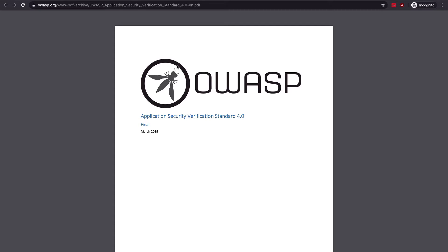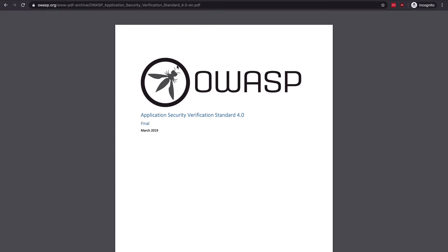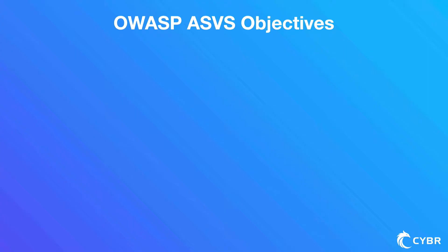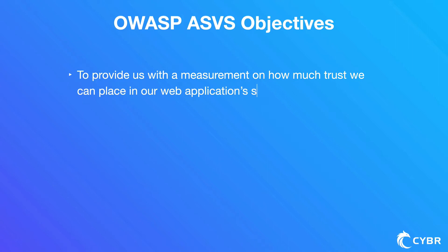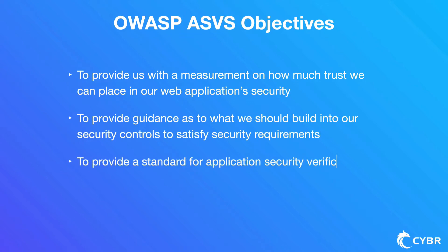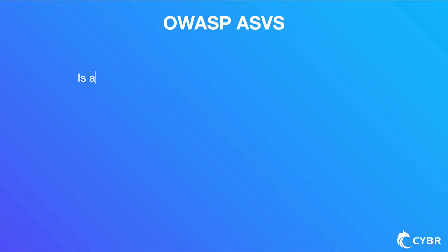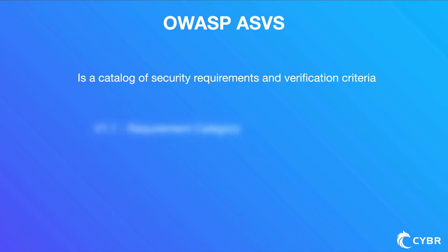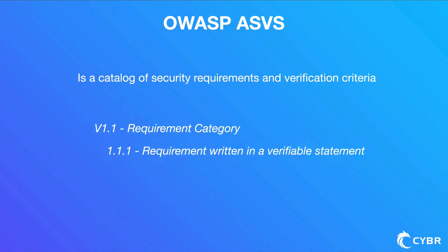The ASVS is currently on version 4.0 from 2019. Its objectives are: to provide a measurement on how much trust we can place in our web application security, to provide guidance on what we should build into our security controls to satisfy security requirements, and to provide a standard for application security verification requirements in contracts with third parties. Essentially, the ASVS is a catalog of security requirements and verification criteria for all of our projects.